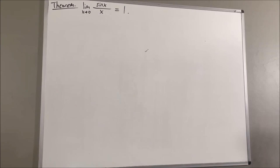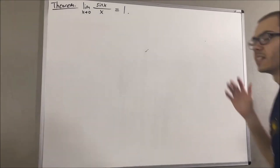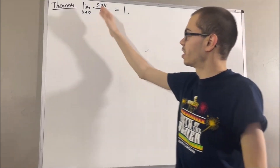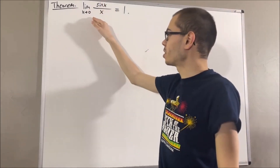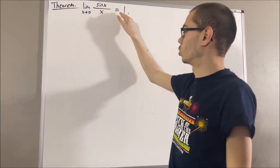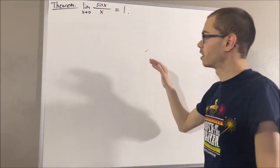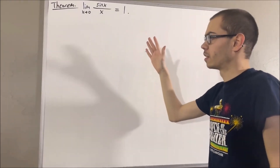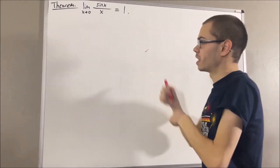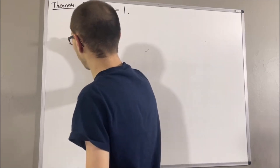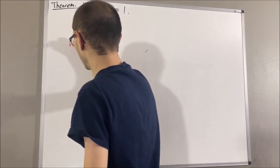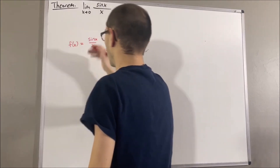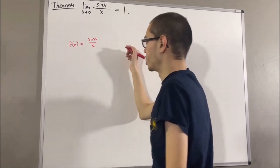Hello! In this video, we are going to prove the following theorem: the limit as x approaches 0 of sine x over x is equal to 1. We are dealing with the limit of a function, essentially f(x) = sine x over x, where x can be any non-zero real number.